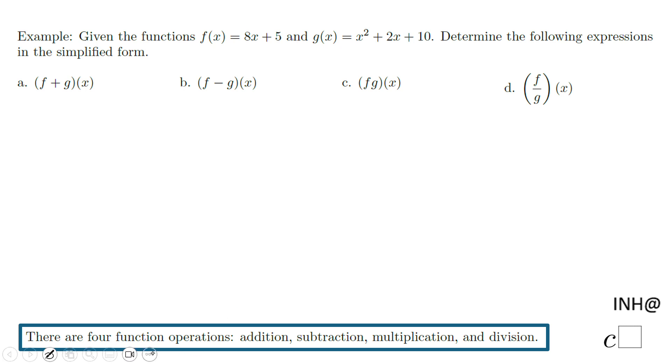These are four function operations. Let's start with part a which says f plus g of x. That will be f of x plus g of x. In this case we have 8x plus 5, and I'm going to use parentheses here just to show that this is f of x, though you don't really need them. Plus g of x: x squared plus 2x plus 10. Again I'm going to use parentheses but you don't really need them.